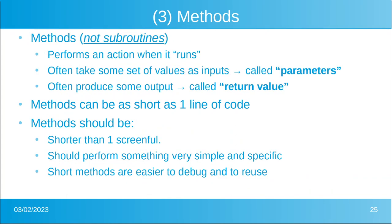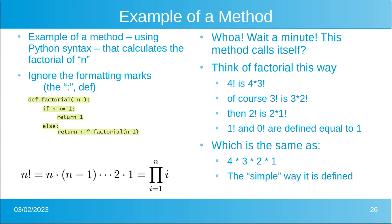Methods are the third type of attribute you can define for an object. An object can have a method; a method performs something. It often takes some set of values as inputs — those are parameters — and it produces an output, which is a return value. Methods can be as short as one line of code, but they should never be any longer than one screenful. It should be something very simple and specific so that it's very easy to debug.